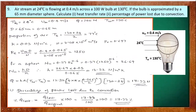So we have: T∞ = 24°C, velocity = 0.4 m/s, actual bulb wattage = 100 W, and wall temperature of the bulb = 130°C. The bulb is approximated as a sphere of 65 mm diameter. We need to calculate the heat transfer rate and percentage power loss due to convection.